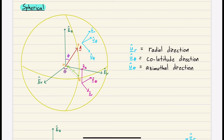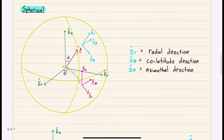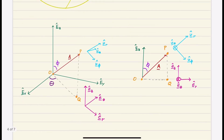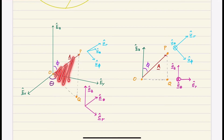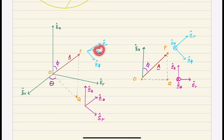The spherical basis has three unit vectors: U-sub-R, the radial direction; U-sub-phi, the co-latitude direction — this is a new one; and U-sub-theta, the azimuthal direction, which is the same as E-sub-theta in the cylindrical basis — they point in exactly the same direction. U-sub-R points from O to P. U-sub-theta is normal to the plane formed by OPQ. And U-sub-phi equals U-sub-theta crossed with U-sub-R.